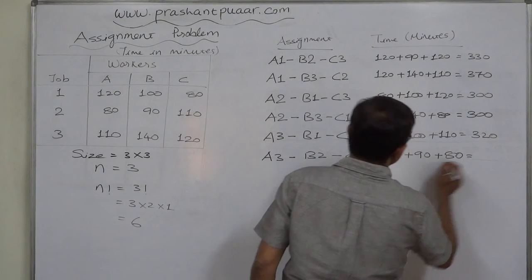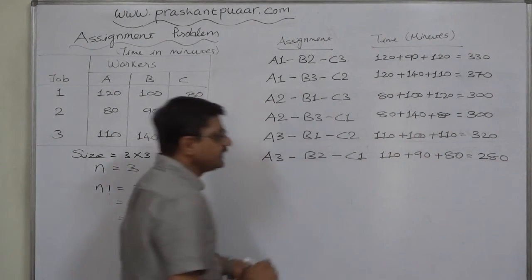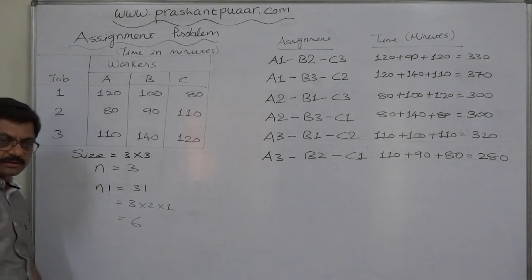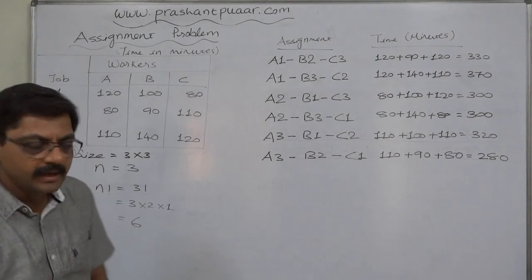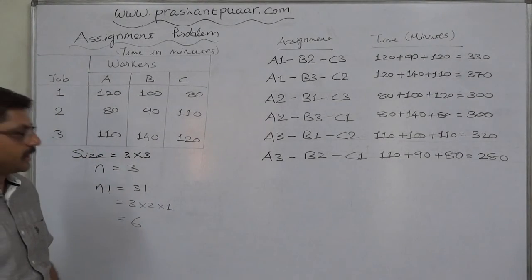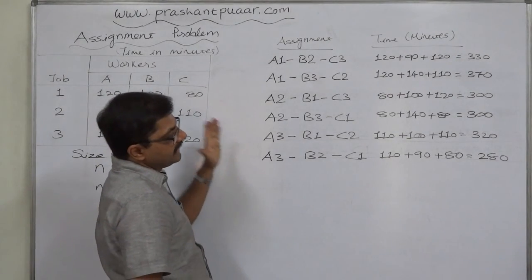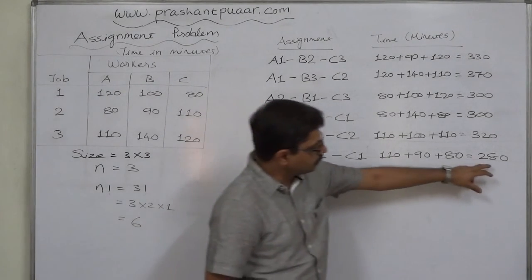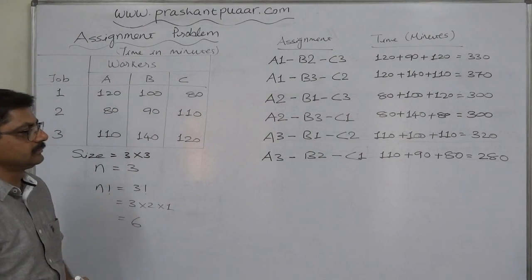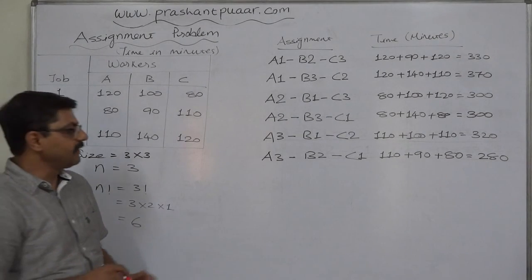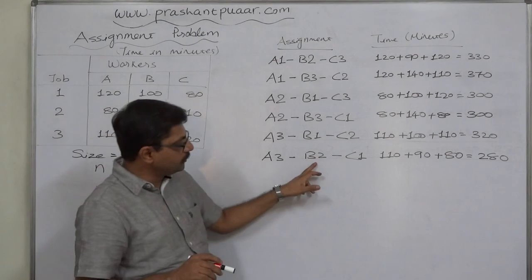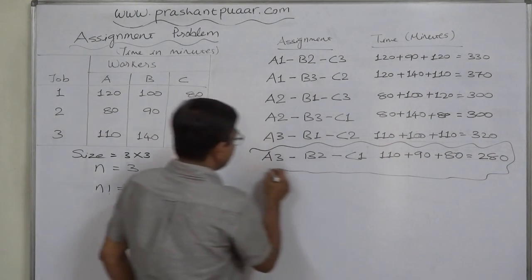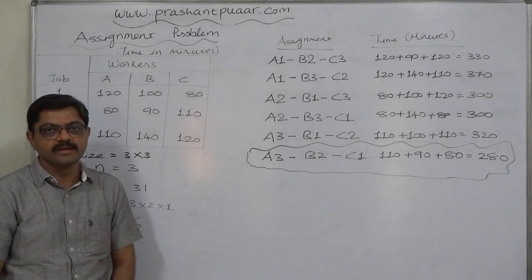These are the six possible assignments where no worker is assigned more than one job and no job is assigned to more than one worker. We can see that the last alternative has the lowest total time. Therefore, according to the complete enumeration method, it is advisable to assign job 3 to A, job 2 to B, and job 1 to C, so that all three jobs can be completed in a total of 280 minutes. This was the complete enumeration method. Thank you.